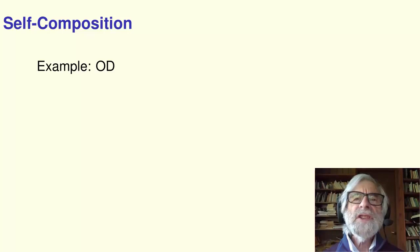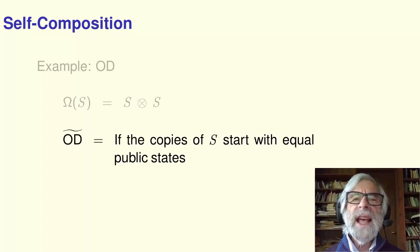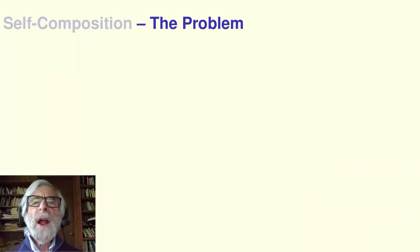Verification has been done this way with a method called self-composition, where if hyperproperty H is an assertion about n executions, then omega of S is a big system that executes n copies of S in lockstep, and H tilde is H restated in terms of executions of the individual processes S in an execution of omega of S. For example, suppose the hyperproperty H is observational determinism. Then omega of S consists of two copies of S run in lockstep, and H tilde asserts that if those two copies of S start with equal public states, then they will always have equal public states.